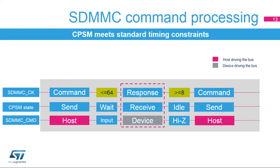Then the CPSM enters the idle state. Note that the CRC fail flag will only be set for responses with a CRC and when the CRC check failed. After a complete command with a response is received, the CPSM remains in idle state for at least eight SDMMC CK clock periods to meet command-to-command timing (NCC) and response-to-command timing (NRC) constraints.